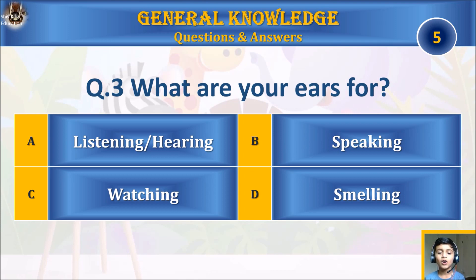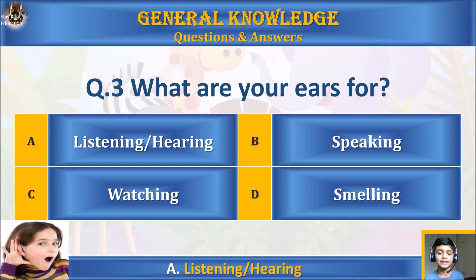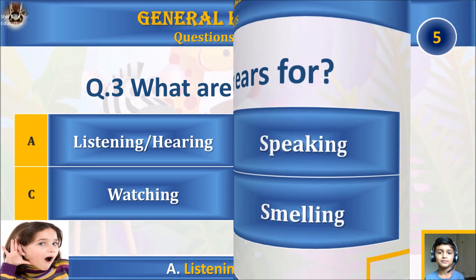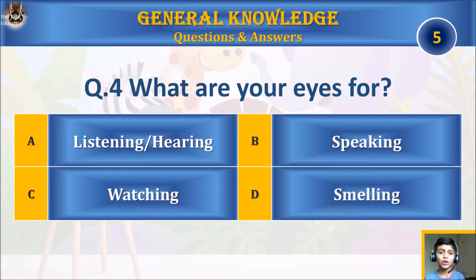Question three: what are your ears for? A) listening and hearing, B) speaking, C) watching, or D) spelling? Your time starts. The answer is A) listening and hearing.